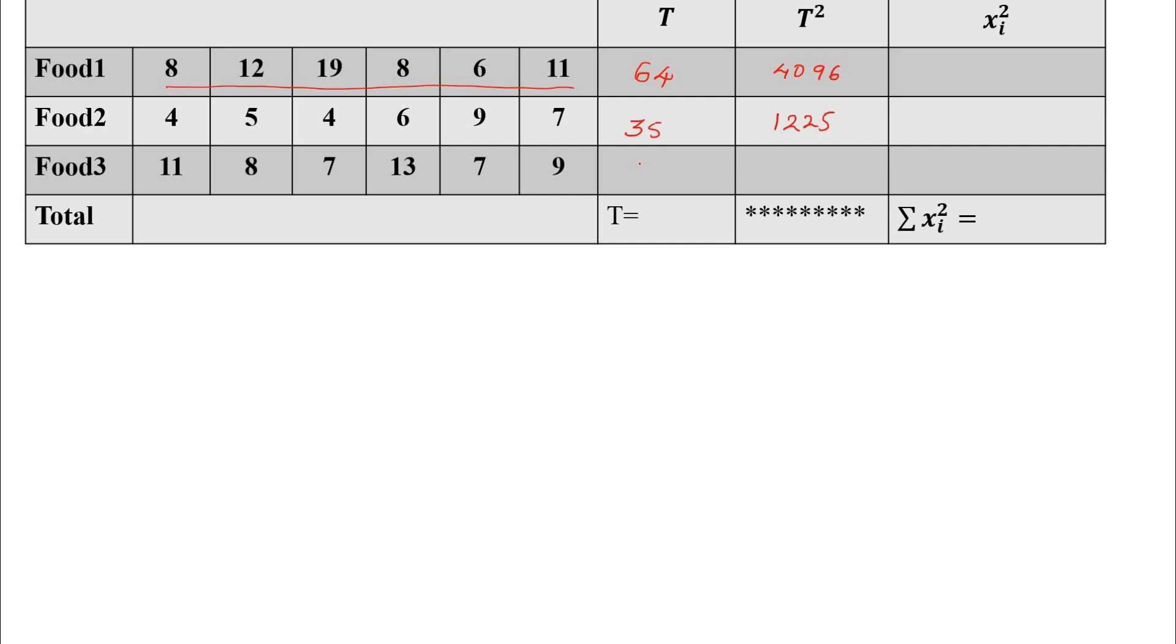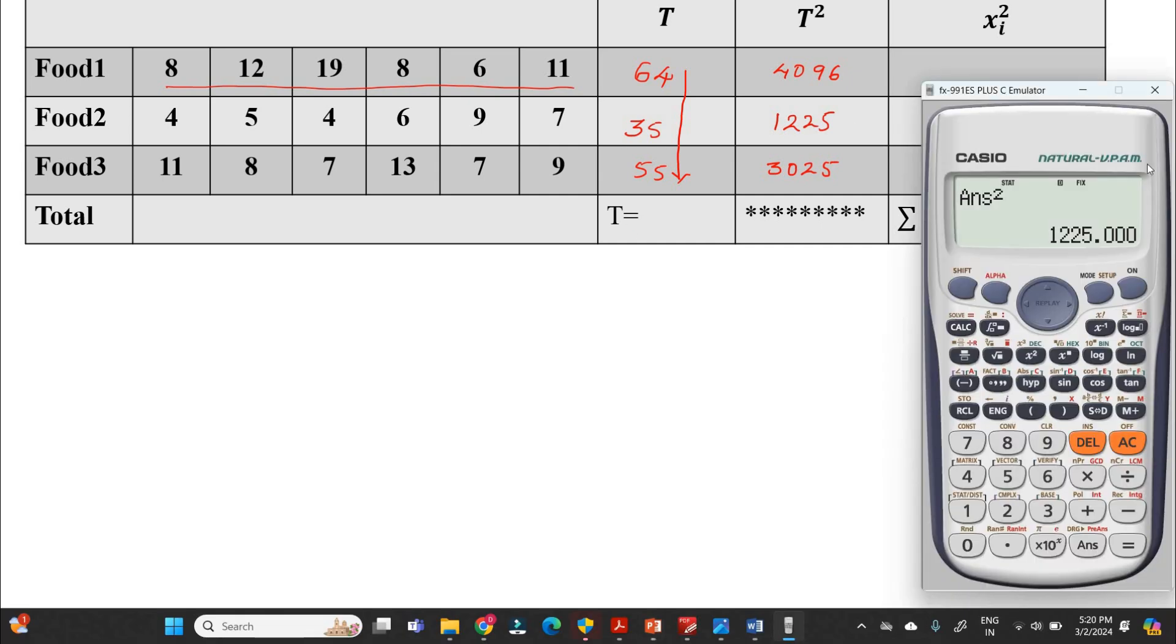Similarly I will calculate for food 3. I am going to get sum of that will be T equals 55, and 55 square will be equal to 3025. Now add all these values to get the value called T. Adding all those values: 64 plus 35 plus 55, which is equal to 154. You can note that value, 154.